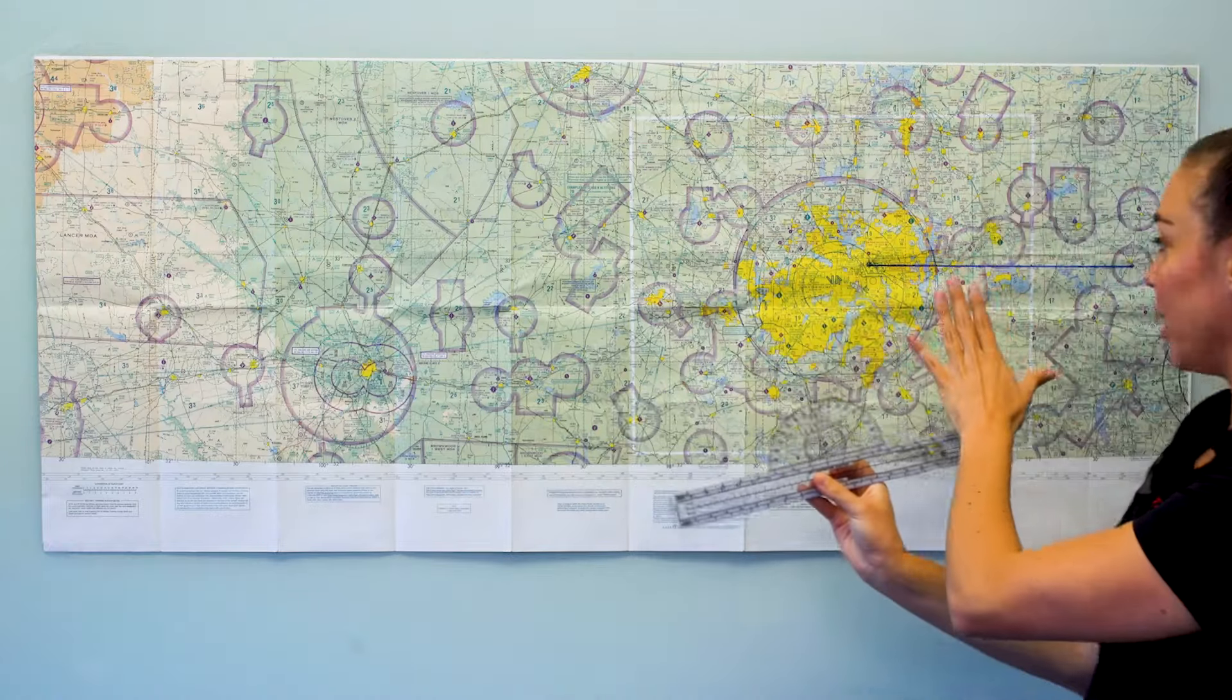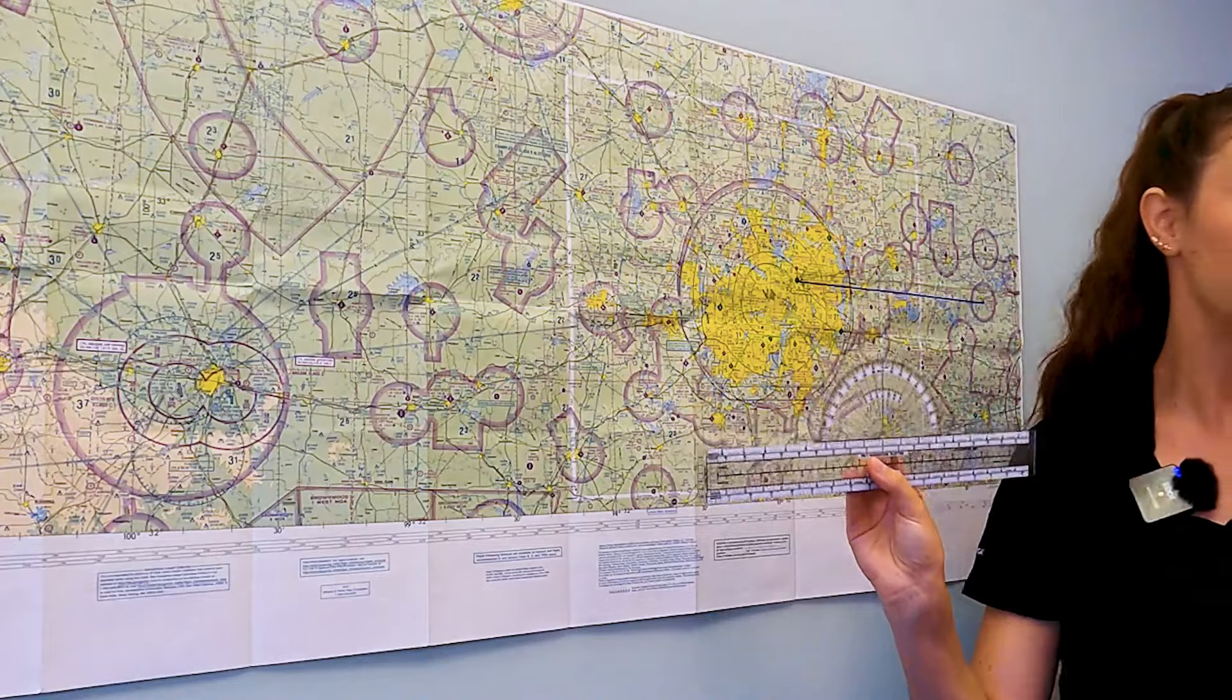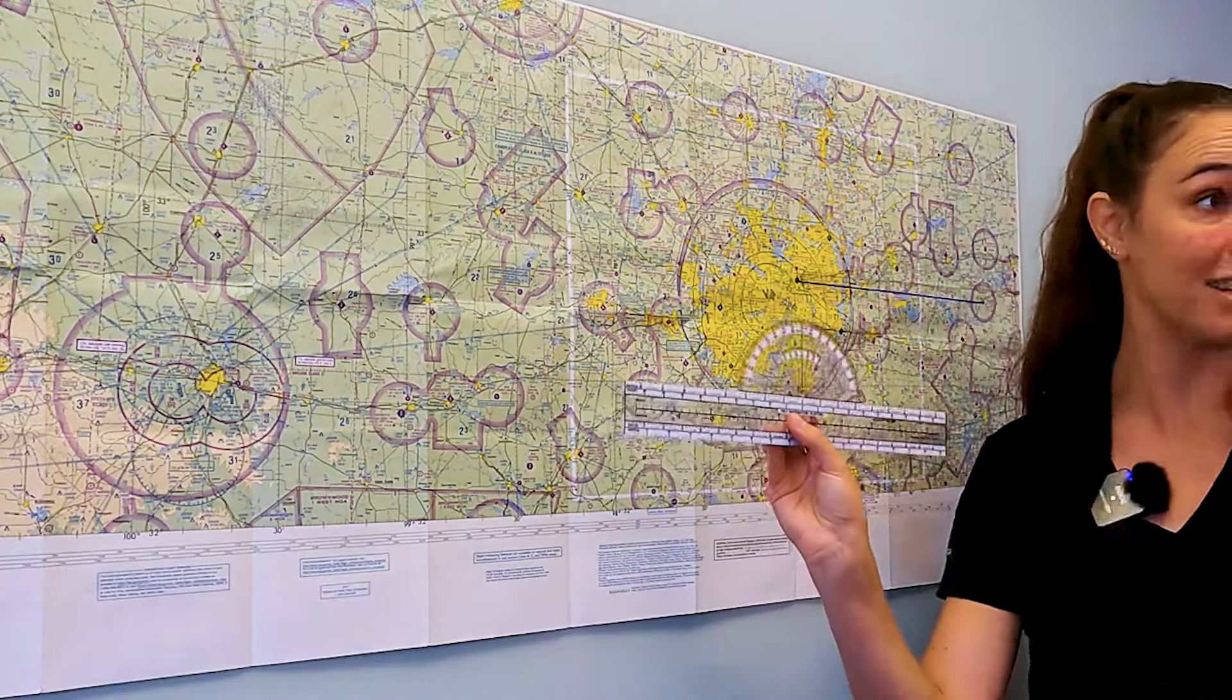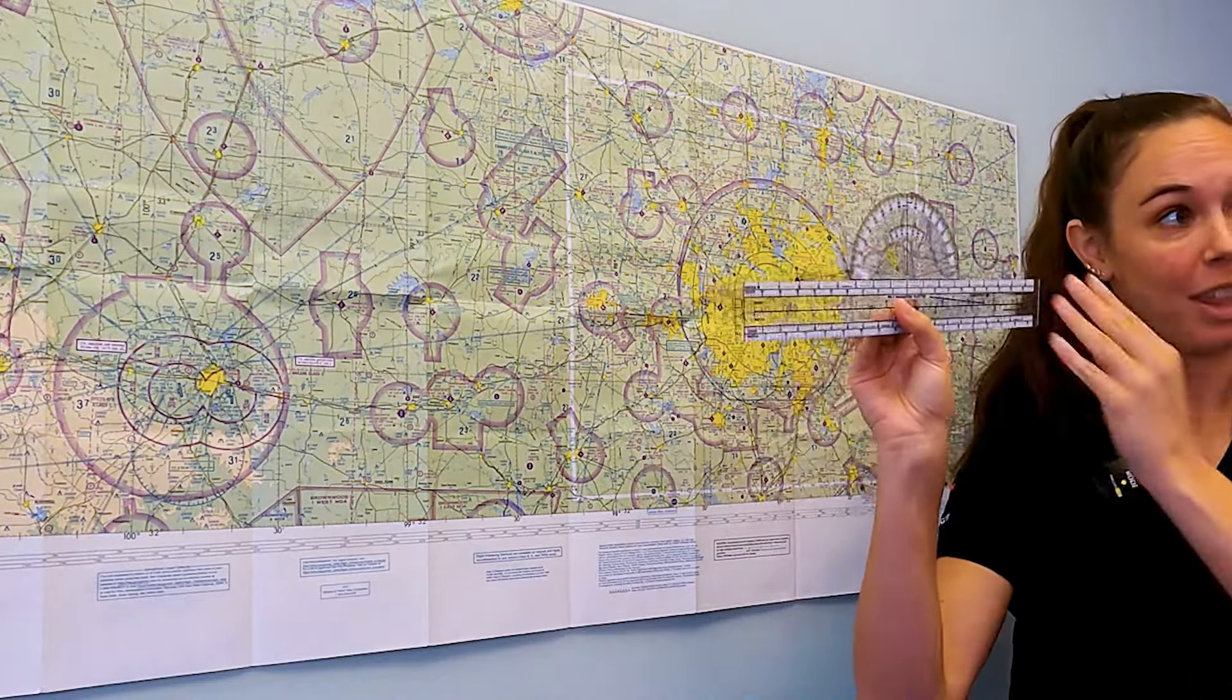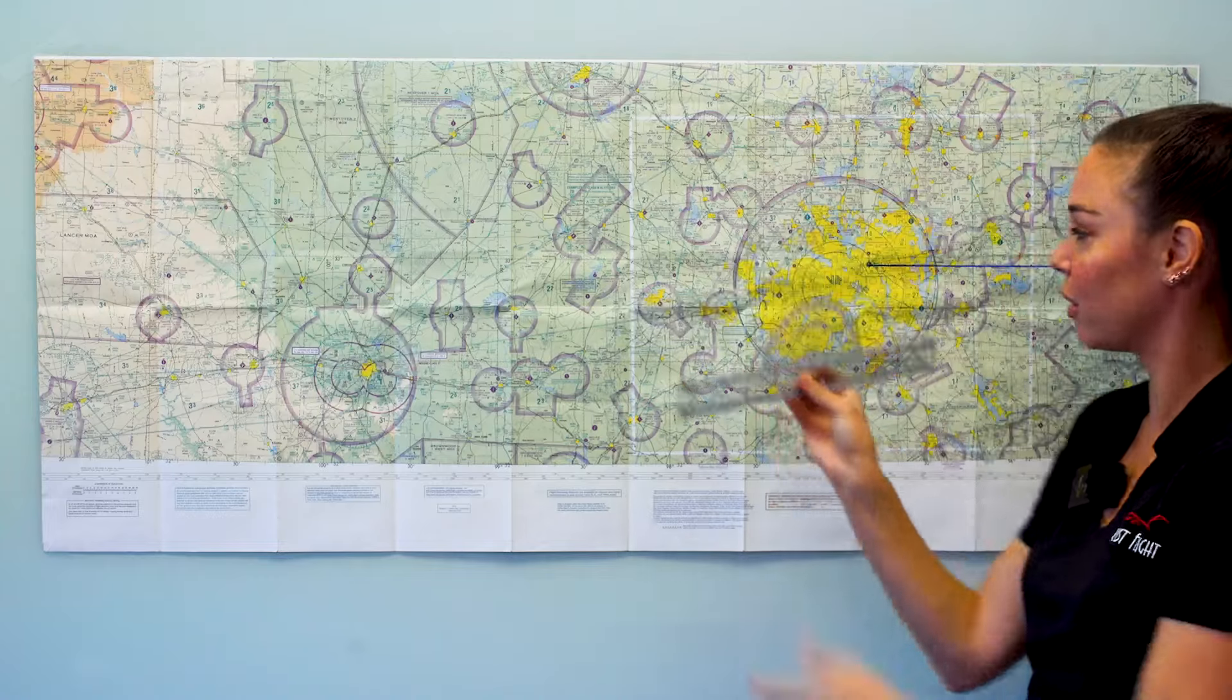The next thing that this tool can help me figure out is what direction to fly to get here. So eyeballing it, I can see it looks almost directly eastbound, right? A zero nine zero heading. So I'm going to prove that with the top portion here of my plotter or the protractor piece.